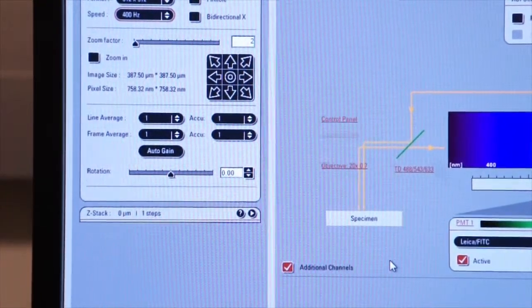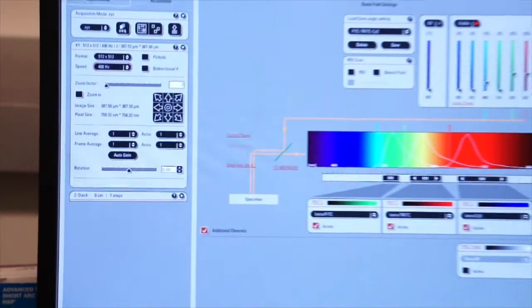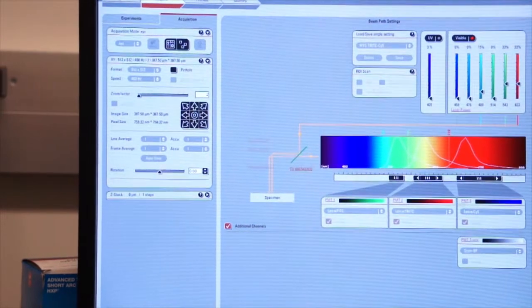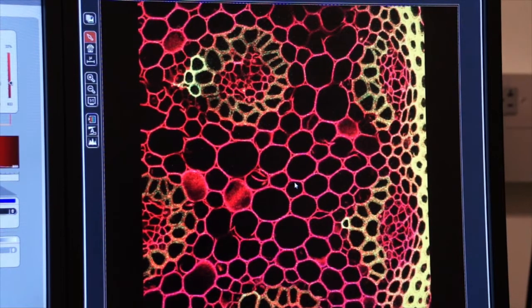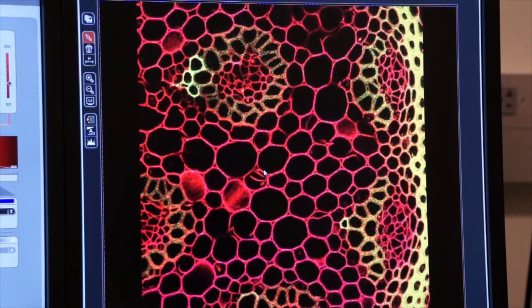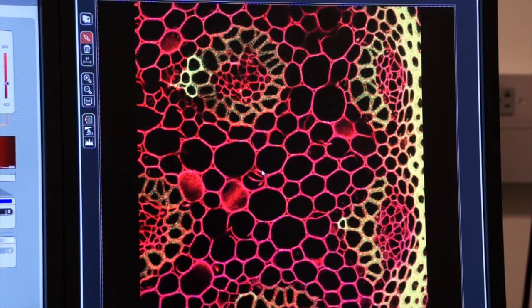We will go down and click on capture an image. Let's capture an image of our specimen and here you see all three of our fluorophores and our composite image. So that's a 512 by 512 image.